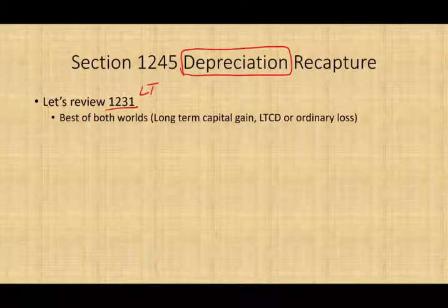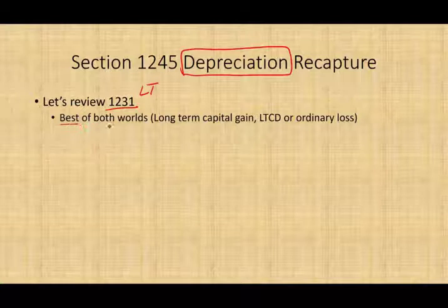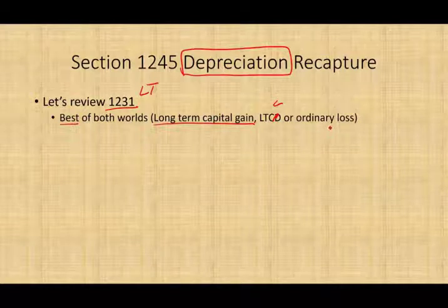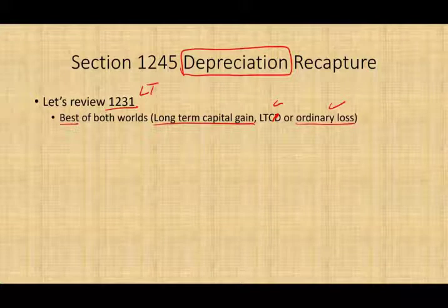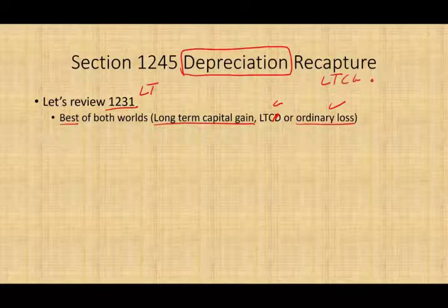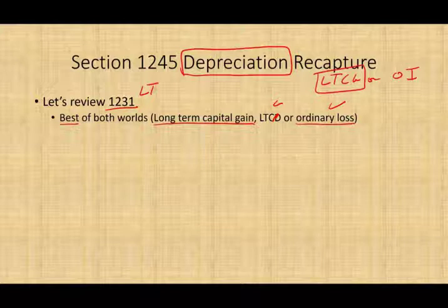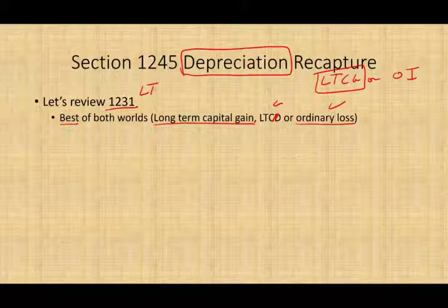The most important thing to know about Section 1231 assets is they get the best of both worlds. If there's a gain, they are treated as long-term capital gain (LTCG). If we incur a loss, they are treated as ordinary loss. We prefer ordinary loss and long-term capital gain because it has a lower tax rate. But we have one hurdle to overcome, and that's Section 1245.